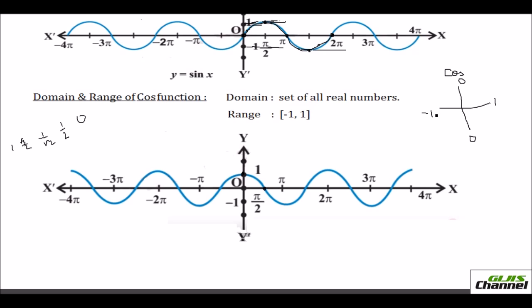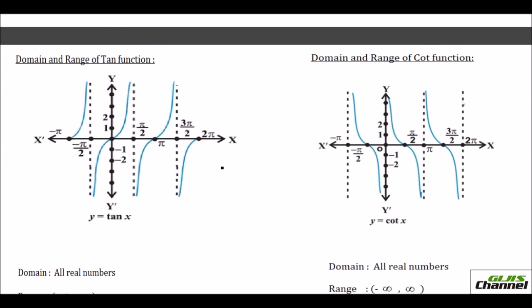At 180° (π) cosine is negative 1, so the graph comes straight down to negative 1. At 270°, cosine is 0, so the graph moves back up to 0. Then it climbs back up to 1 at 360°. The graph moves within the border of negative 1 to 1, so the range is [−1, 1].